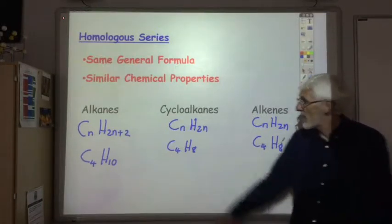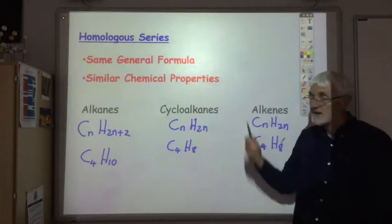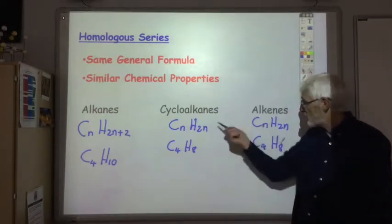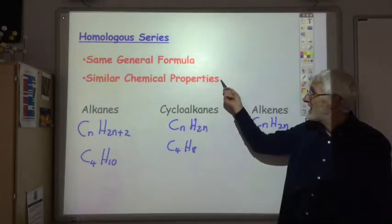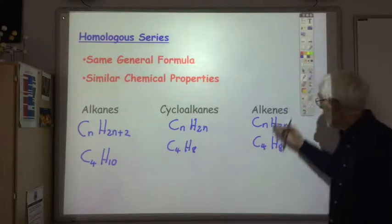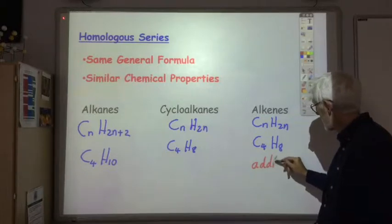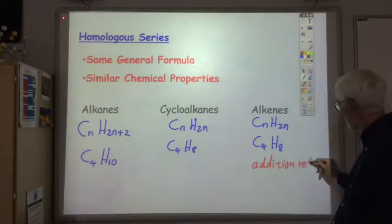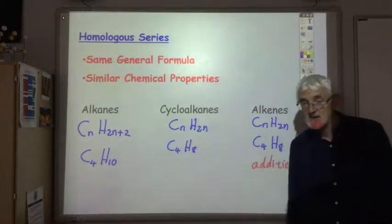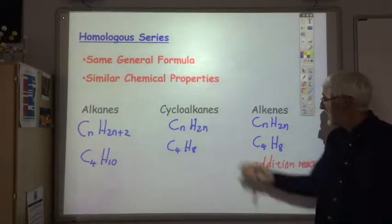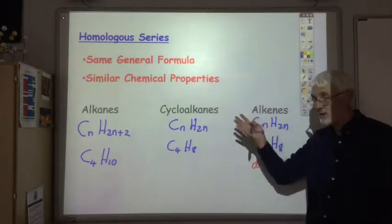So we see why alkanes are in a different homologous series from cycloalkanes and alkenes. But why are these two things in different homologous series when they have the same general formula? They're in different homologous series because they have very different chemical properties. All the alkenes undergo addition reactions, whereas cycloalkanes do not undergo addition reactions. So they have the same general formula but they don't have similar chemical properties, and that's why they're in two separate homologous series.